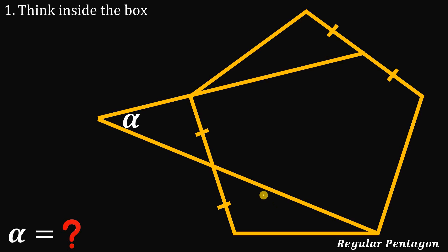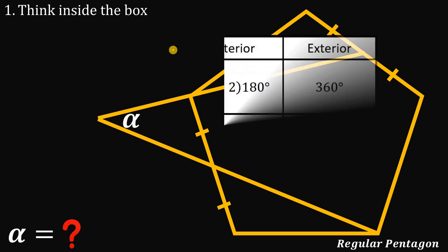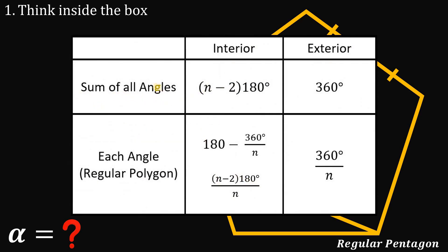Since we're given a regular pentagon and we want the angle, we will use this concept. The sum of all angles of any polygon is given by the formula (n − 2) × 180°, where n is the number of sides. The sum of all exterior angles always adds up to 360°. Each interior angle of a regular polygon equals (n − 2) × 180° ÷ n, and each exterior angle equals 360° ÷ n.